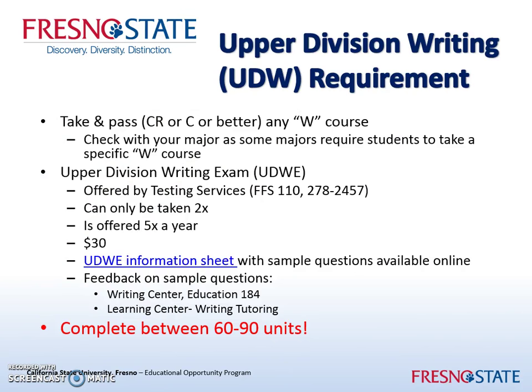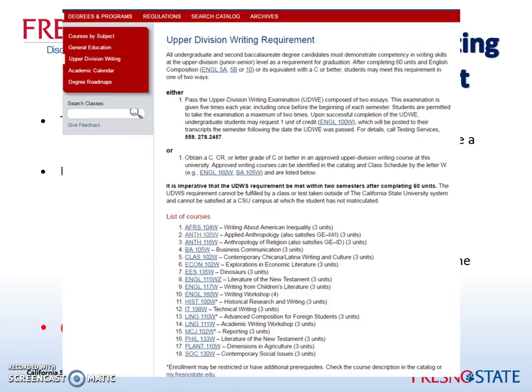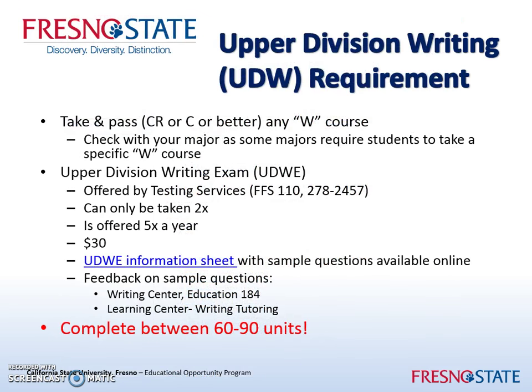There are other W courses which are listed in the general catalog. Some majors require a specific W course — check with your major department. If your major does not require a specific W course, another option for completing the upper division writing requirement is the upper division writing exam.